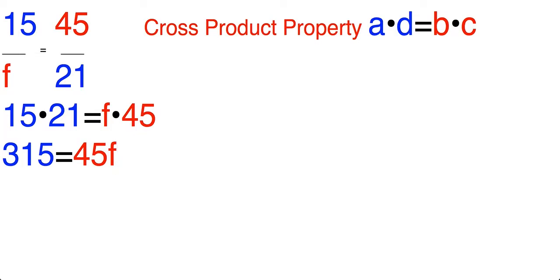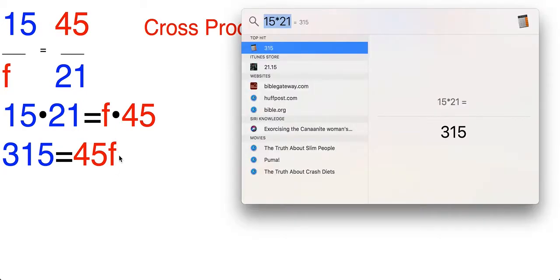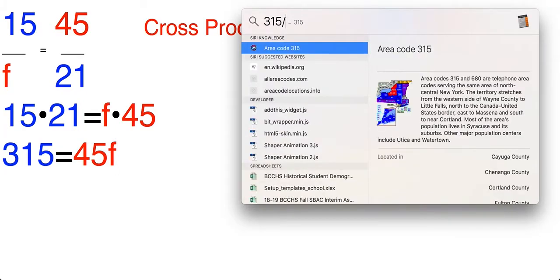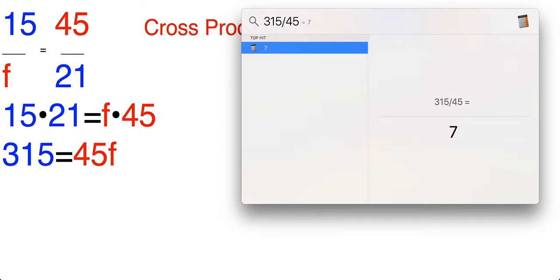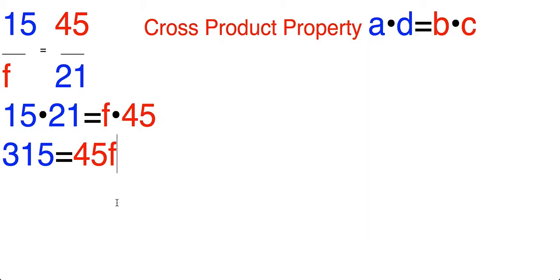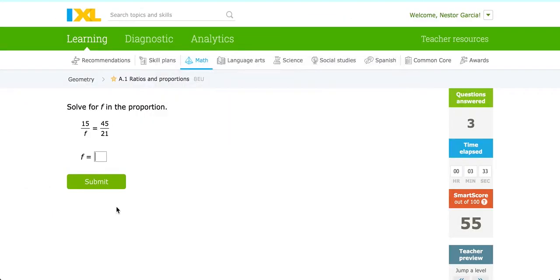Now recall to solve this one step equation. Because these are being multiplied and we're trying to isolate the F, we need to divide both sides of the equation by 45. So in short, we are dividing 315 by 45, which results in 7. Therefore, 7 equals F would be our final answer. The value of F is 7.